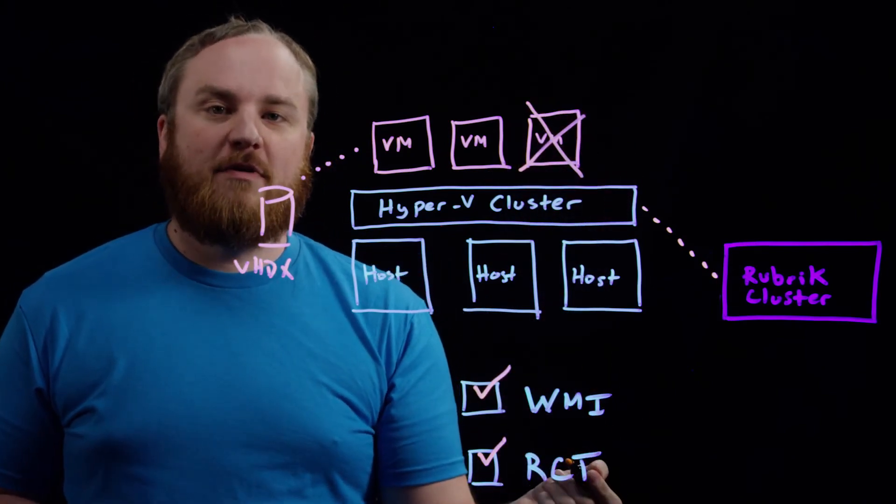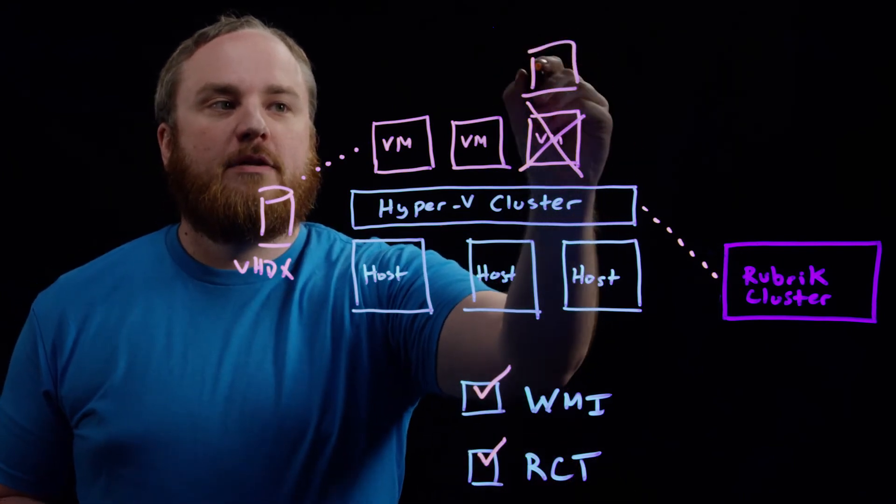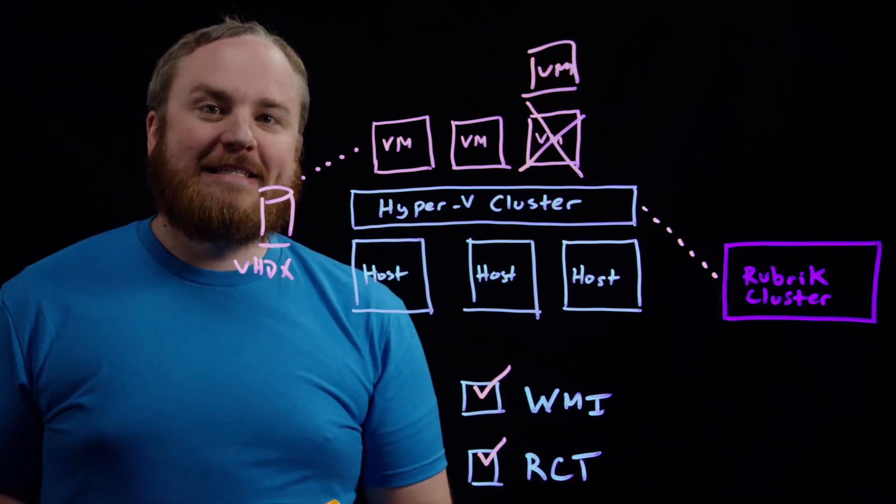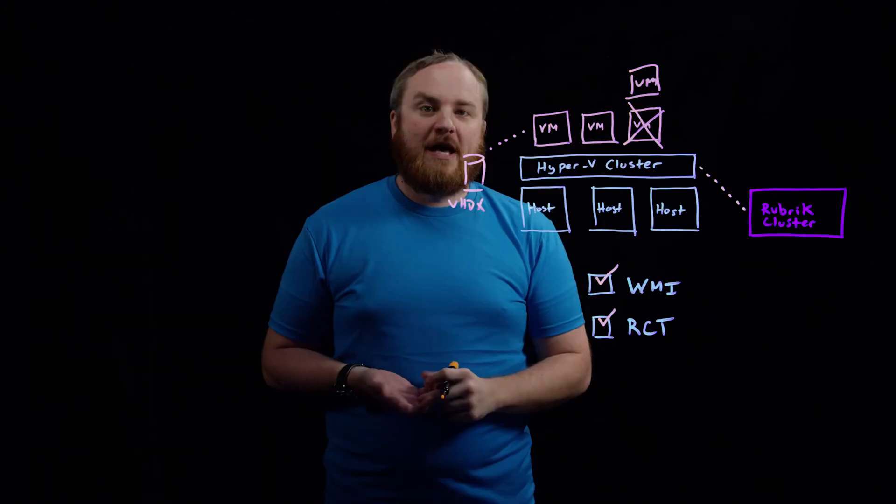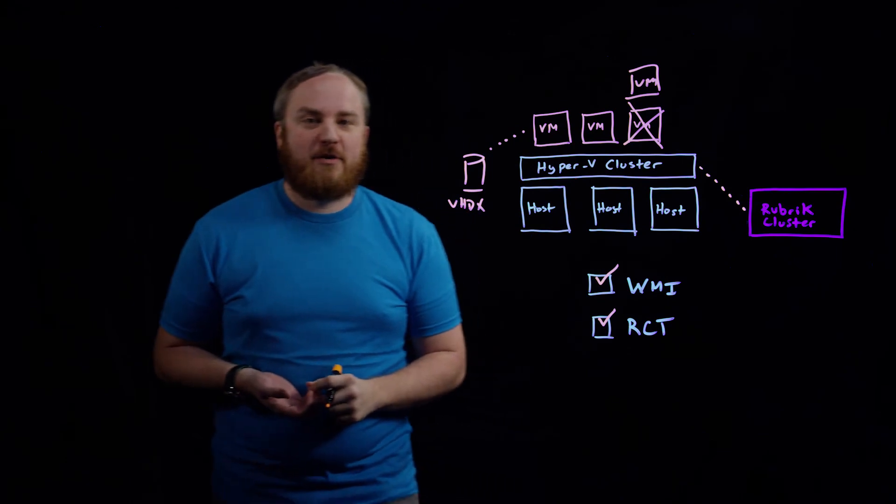You can use the instant recovery feature of Rubric to actually build you a complete new working virtual machine instantaneously. It takes near-zero RTO, typically a few seconds it's back up and running. And then you've avoided that disaster, and you're ready to roll.